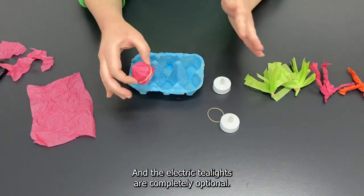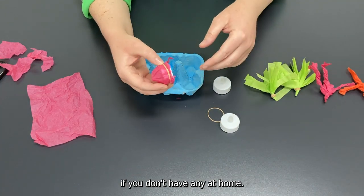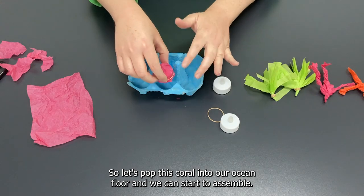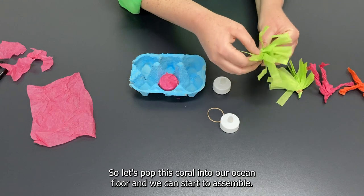And the electric tea lights are completely optional. Your reef will look beautiful without the lights if you don't have any at home. So let's pop this coral into our ocean floor and we can start to assemble.